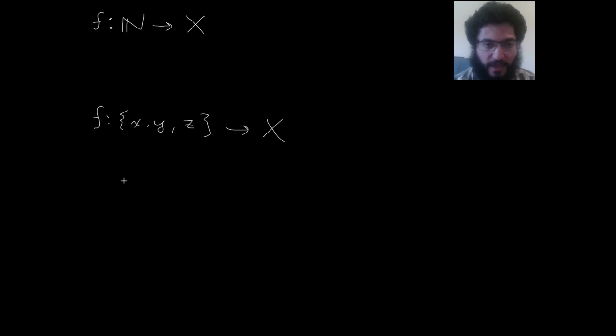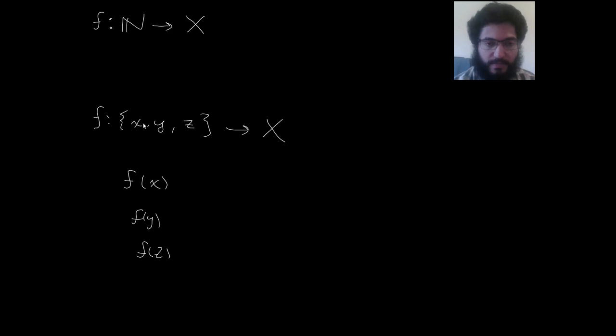How would you describe a function whose domain is the set of natural numbers? If you have a function whose domain is a set consisting of a few things, then you can describe that function by just saying what it does to each of those things — just tell me what is f of x, what is f of y, what is f of z. As long as x, y, and z are different, you can put anything you want for what these should be, and that will describe a function.